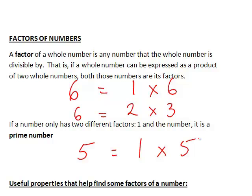Note that 1 itself is not a prime number, as 1 equals 1 times 1, which is not a product of two different factors. The first few primes are 2, 3, 5, 7, 11.